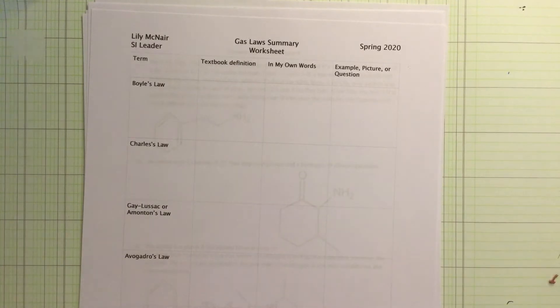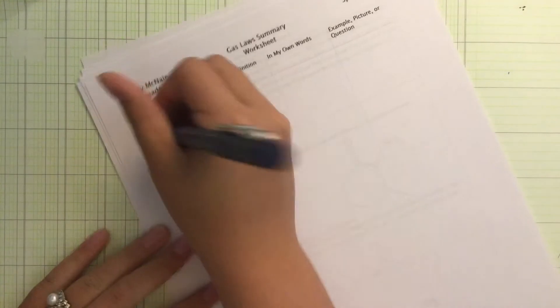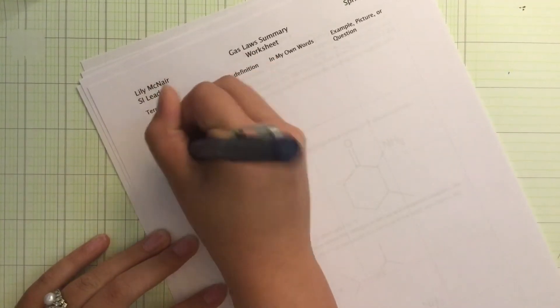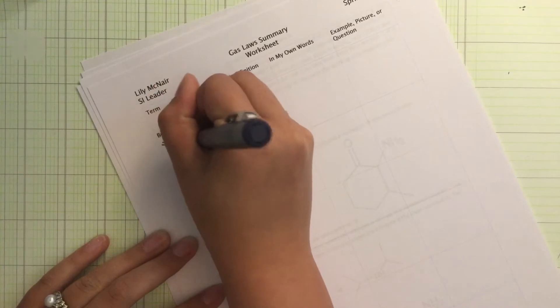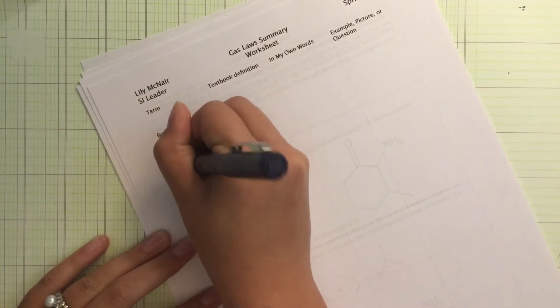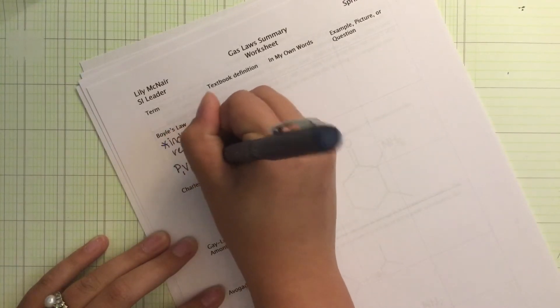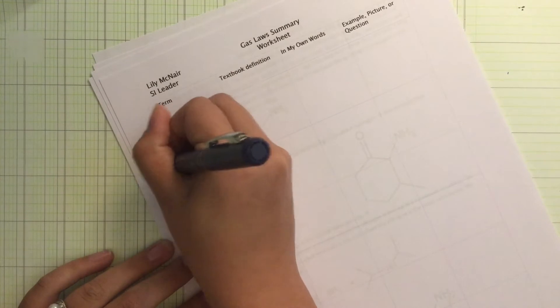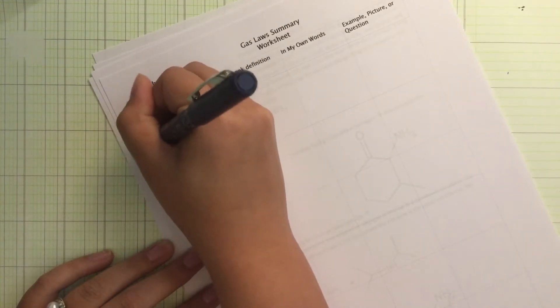The first one we're going to start with is Boyle's Law. Now the interesting thing about Boyle's Law is that Boyle's Law is actually an indirect relationship. And the equation we have is P1V1 is equal to P2V2. If we were to graph this out, we would have something like this. This is non-linear.